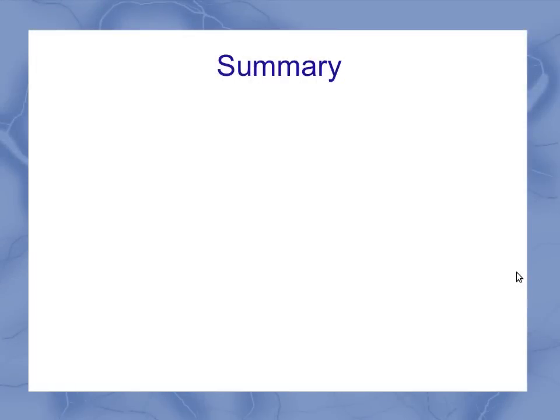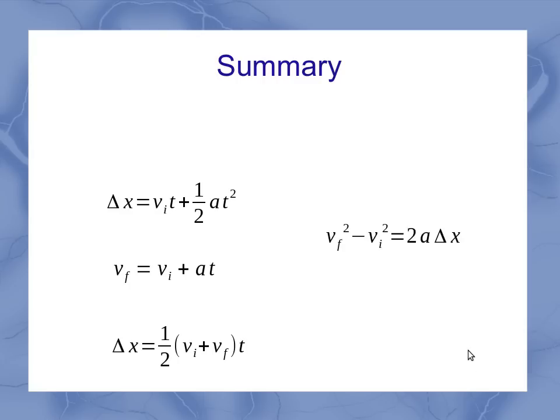Now to summarize these, I've got two equations that came to us from calculus. One equation that came to us from the definition of the average velocity and how that works if I've got constant acceleration. And then I've got two additional equations that show up when I do algebraic rearrangements of these.